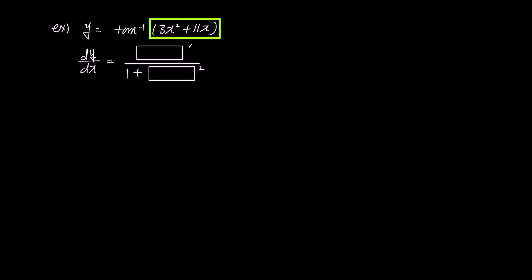we know what's inside the box, and we can directly substitute the box prime with 6x plus 11, and the box in the denominator with 3x squared plus 11x, giving us dy over dx is